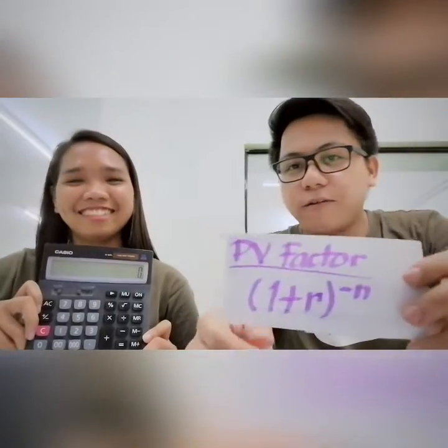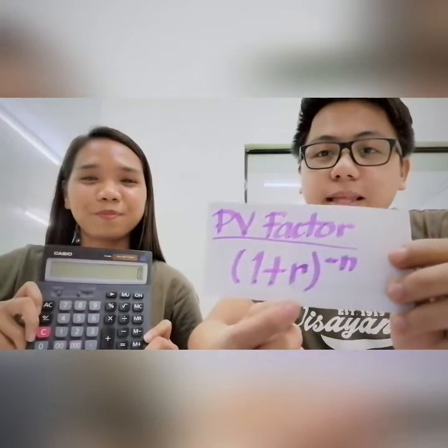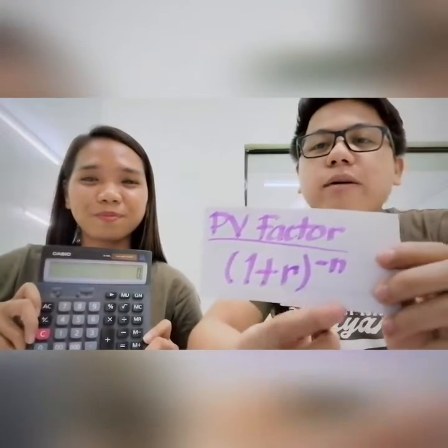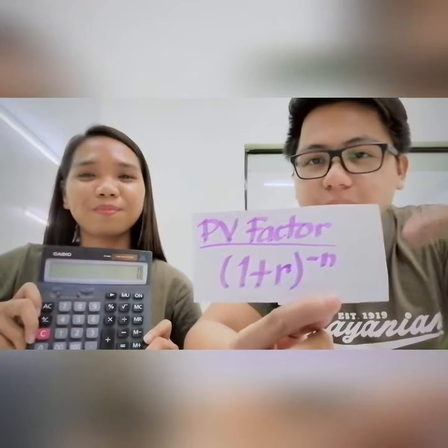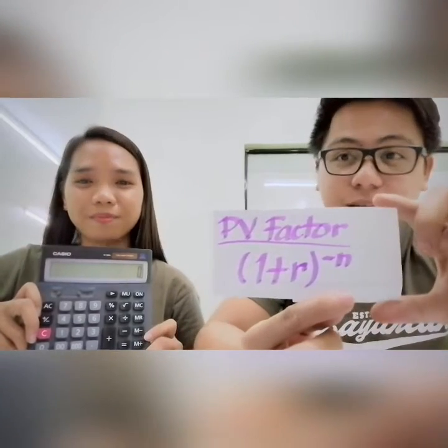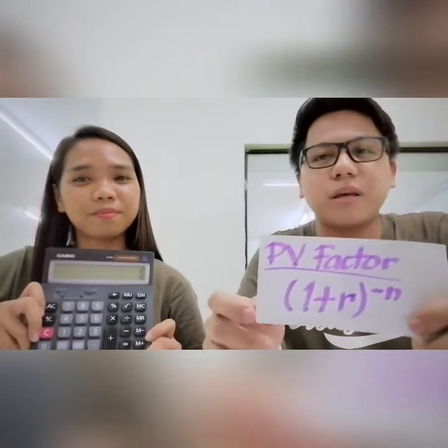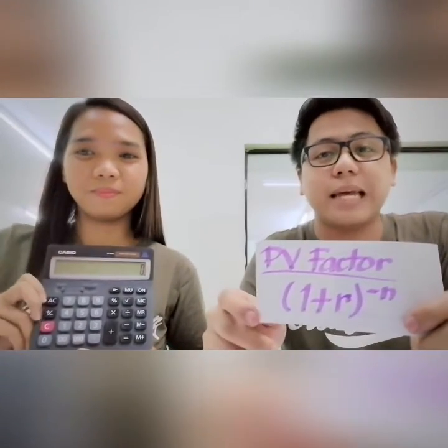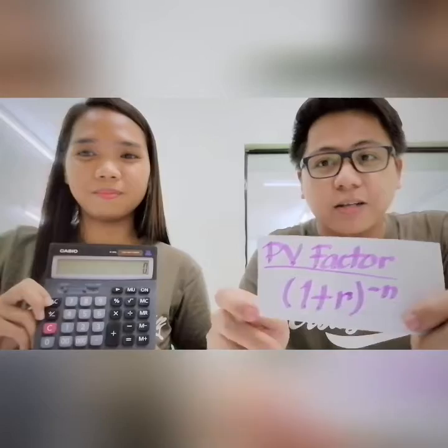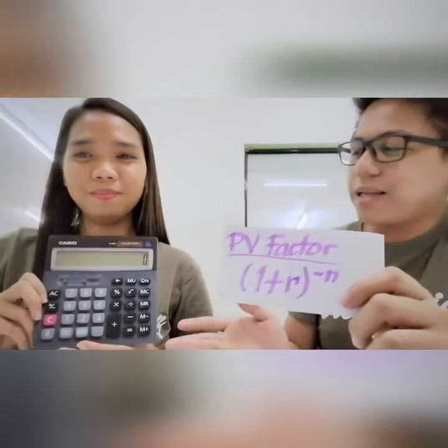First off, we are going to compute for the present value of 1. The formula for that is 1 plus the rate to the power of negative n, where n is the number of periods of compounding. For example, we are compounding with a 10% rate for 10 years.